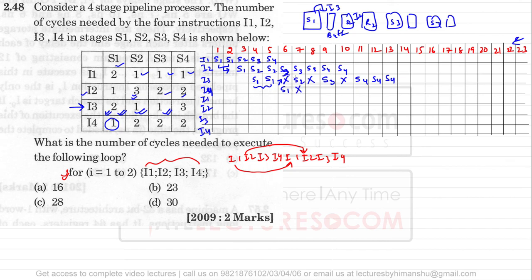After I4 finishes S1, stage S2 is not available yet — it becomes available only at the eighth clock cycle. So I4 enters S2 at clock cycle 8 and requires two clock cycles in S2. Then I4 requires two clock cycles in stage S3 and then two clock cycles in stage S4, but S4 is not available immediately, causing another stall.